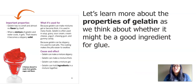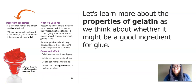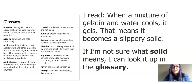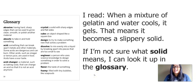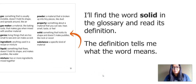Let's learn more about the properties of gelatin as we think about whether it might be a good ingredient for our glue. Gelatin has no smell and almost no flavor by itself. When a mixture of gelatin and water cools, it gels — that means it becomes a slippery solid. Gelatin and corn syrup are two new ingredients we're going to learn about. If I'm not sure what solid means, I can look it up in the glossary. A glossary tells us what the important words are in the book and their definitions. The definition of solid: something that holds its shape and doesn't make puddles, like rock or wood.